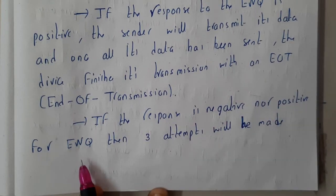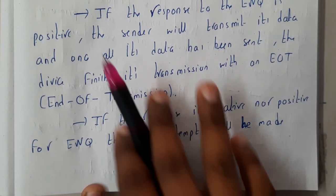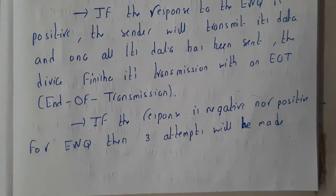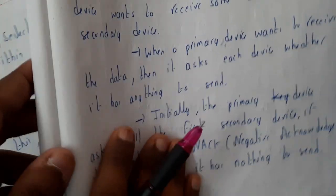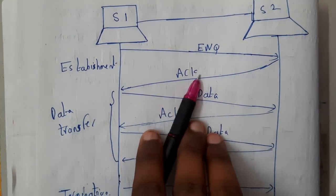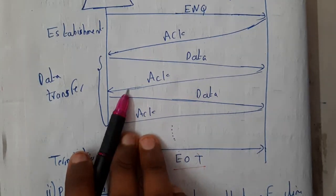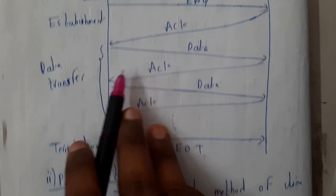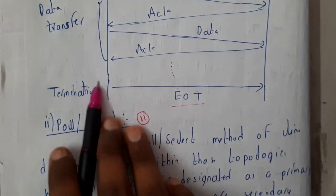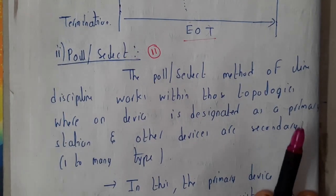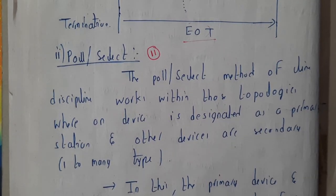If the response is negative, the enquire is retried three times: we send once, wait, send again, wait, send again — after that we cancel the request. So to summarize: we establish the connection with ENQ; if we get an acknowledgement we start sending data; the receiver sends acknowledgement for each data received requesting the next; and once all data is done we send EOT — End of Transmission. In the next tutorial we will be going through Poll and Select.